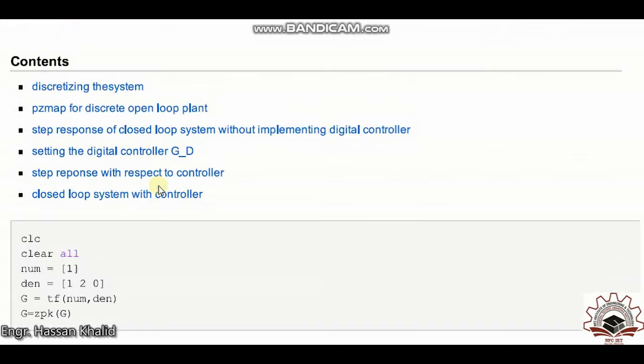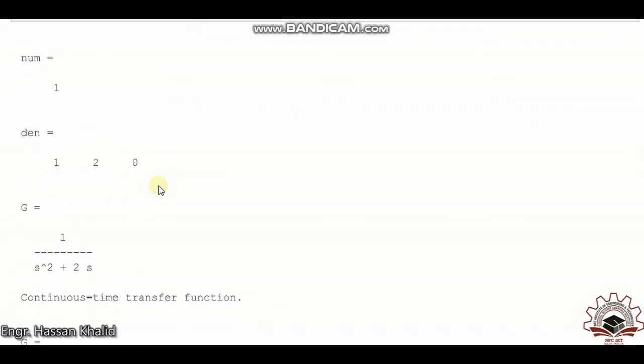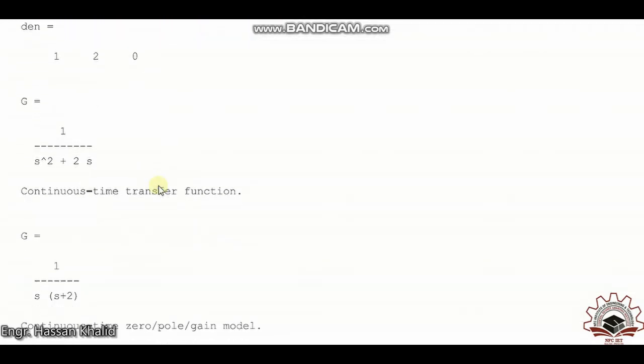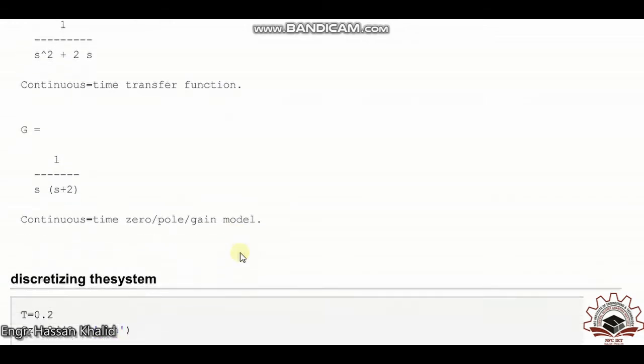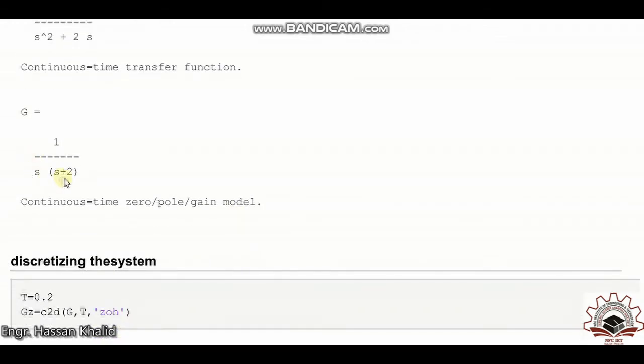So the system without using the zero pole gain is actually one over s squared plus two s. By using the ZPK command, it transforms it into the form of gains.